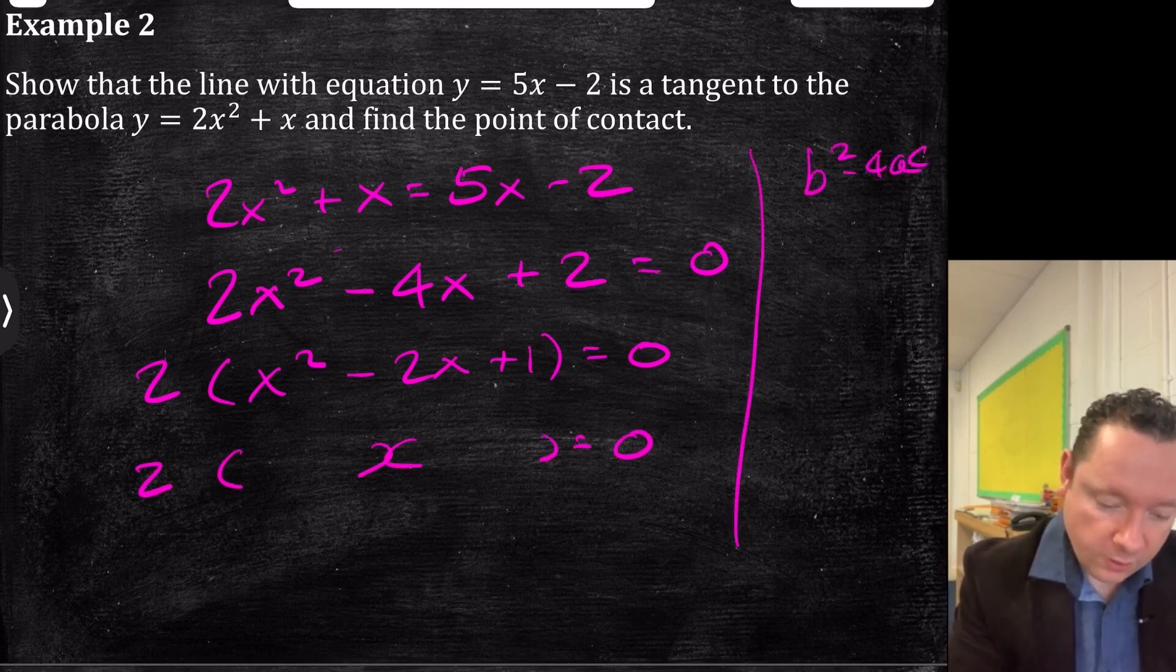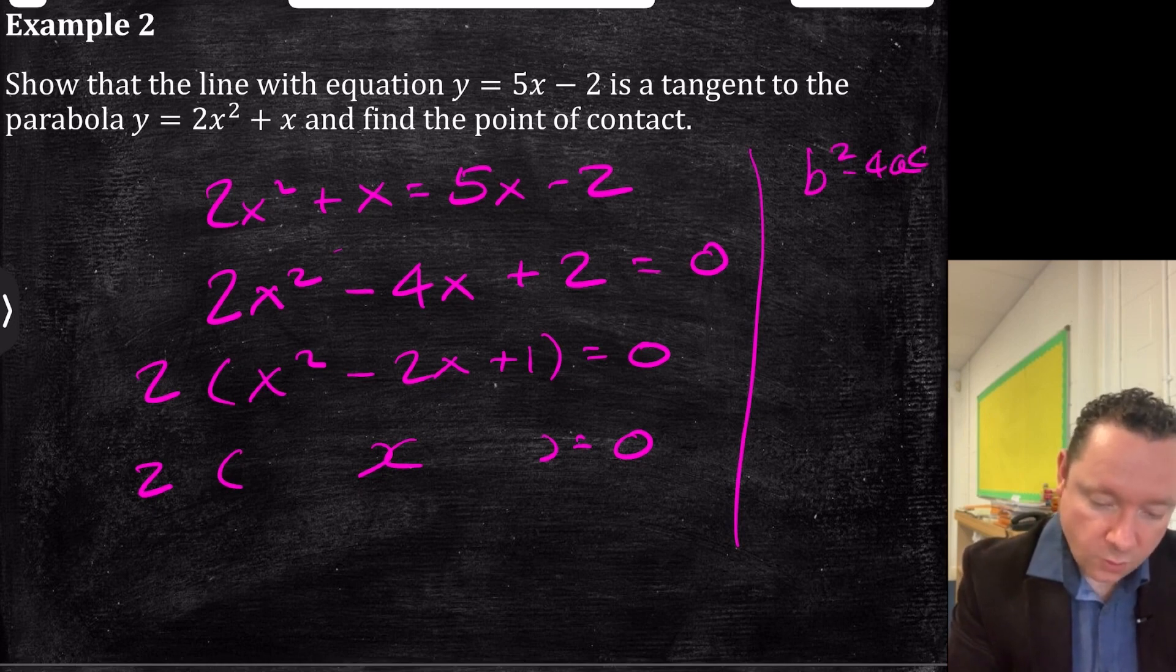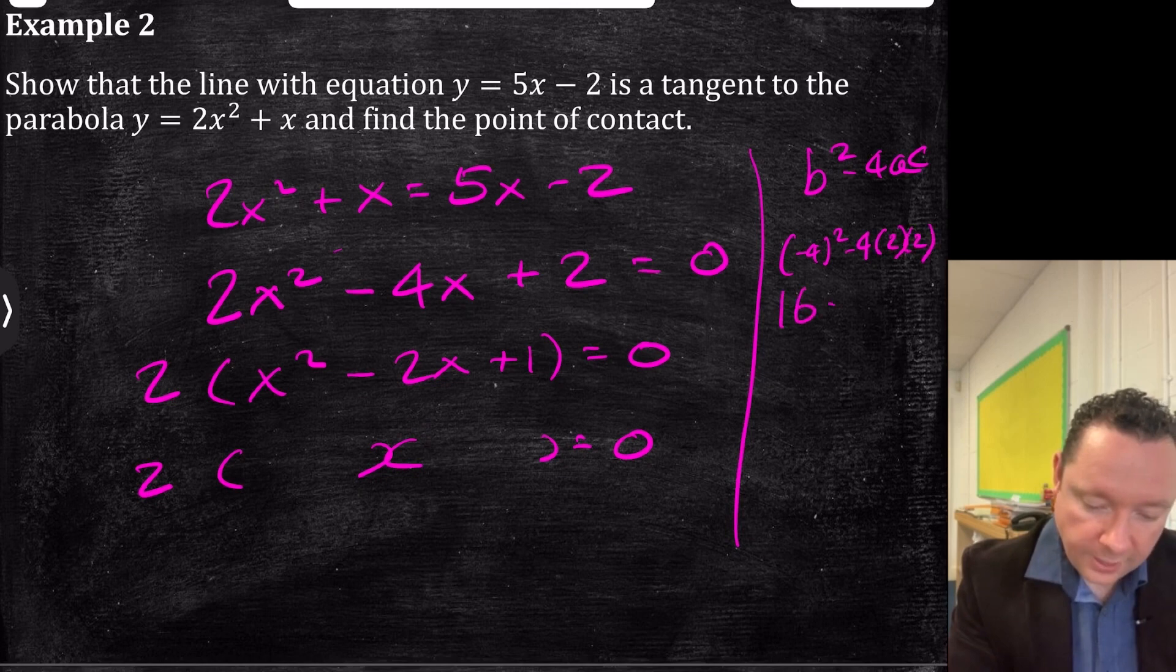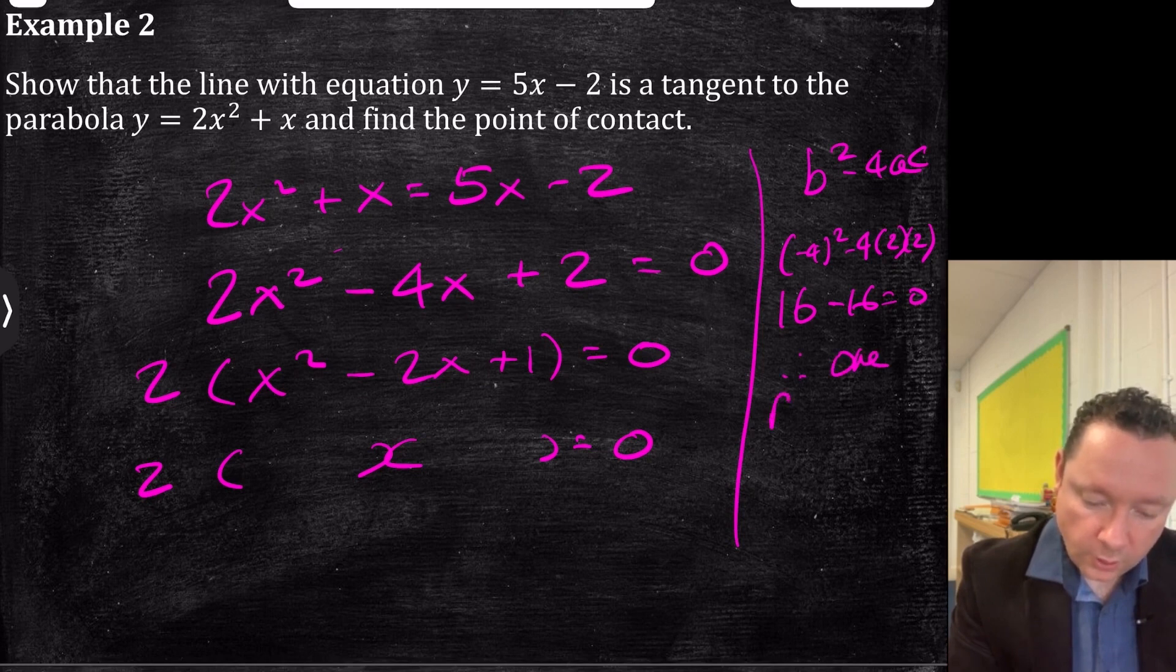For the original equation, 2x² - 4x + 2. That's (-4)² - 4(2)(2). That's 16 - 16 = 0. Therefore, one point of contact.